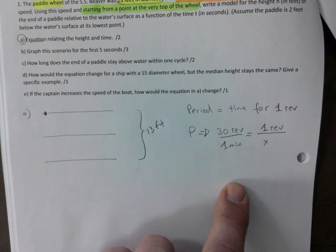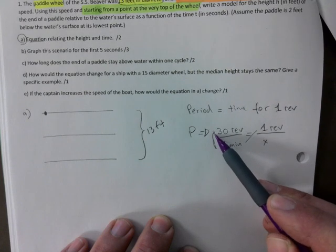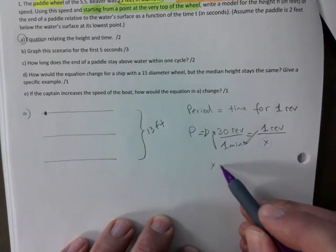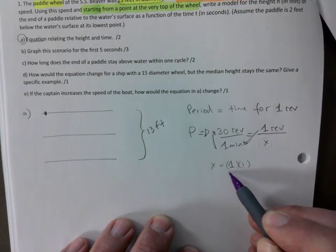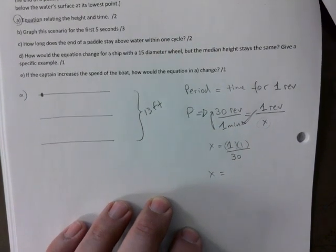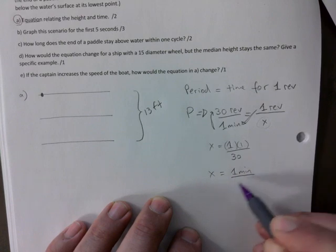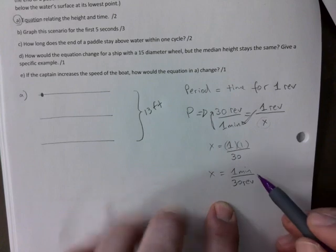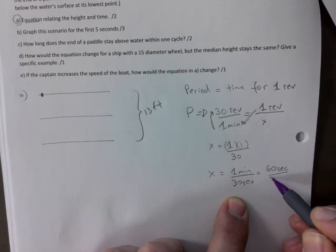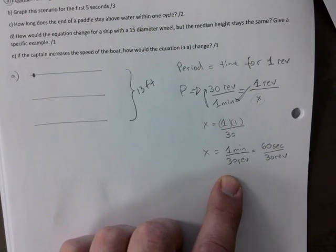And you remember this one, right? Cross multiply and divide. So x is really 1 times 1 divided by 30. And so this is 1 times 1 would be in minutes, and this is 30 revolutions, right? Let's turn that into seconds because we're going to have a fraction of a minute. That's the equivalent of saying 60 seconds for 30 revolutions.